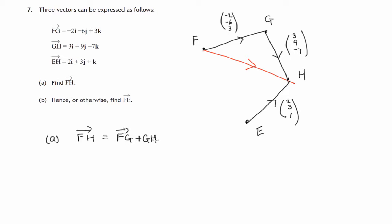And the components are (-2, -6, 3) for F to G followed by G to H components (3, 9, -7).